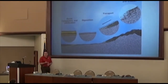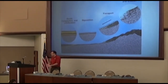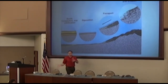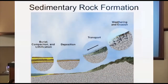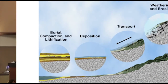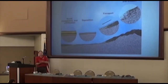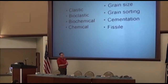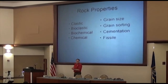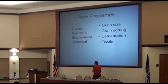So that's erosion — the breaking and moving of rocks. How do we get from erosion to sedimentary rocks? We get those broken and moved rocks and get them stuck together somehow. The fancy word we use for that is compaction and lithification. Lithification means to turn into a rock. Now we're going to talk about some different properties of sedimentary rocks.